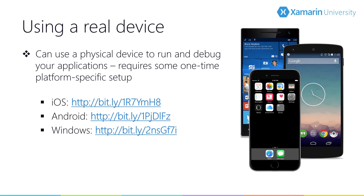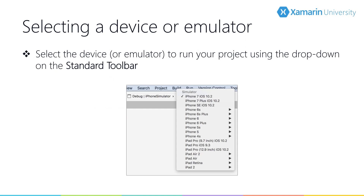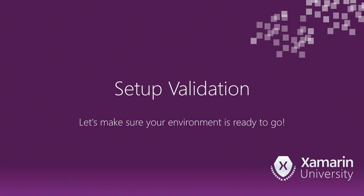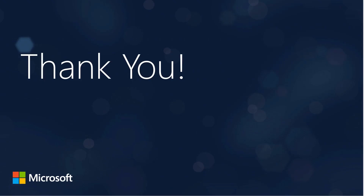You can also run your apps on physical devices — each device type requires some setup, all of which is covered in the links shown here and in the Start Here document. If you have devices handy, it's a good idea to set them up for development so you can use them for testing. Once the development tools are installed and you have a project open, you'll be able to select your target execution platform, either an emulator, simulator, or a connected physical device. That brings us to the end of our introduction to Xamarin. If you're having trouble with your setup, contact Xamarin University for a one-on-one office hour and we can help. Thank you for watching this introduction to Xamarin.